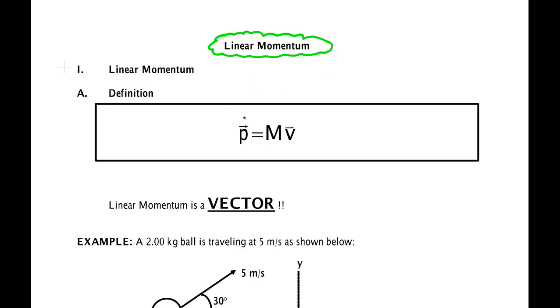The definition of linear momentum is that it is a vector defined by the mass of the particle or object and the velocity of the object.